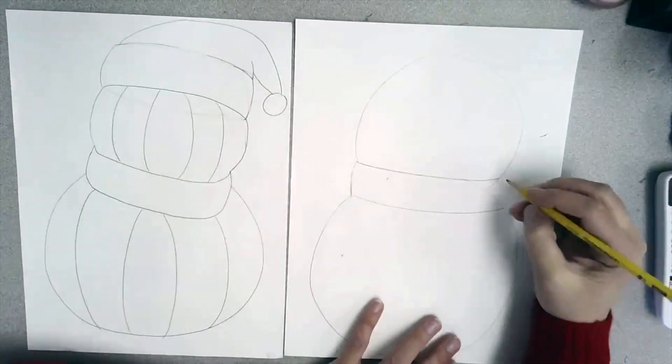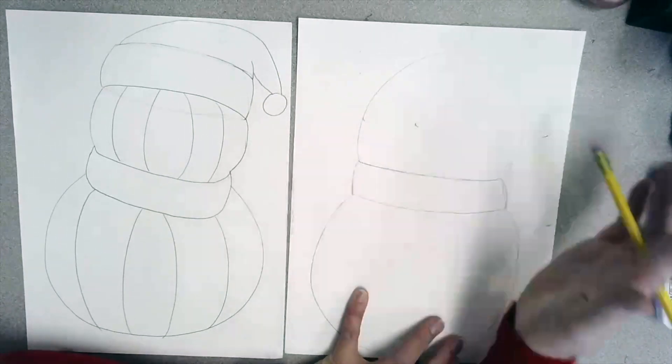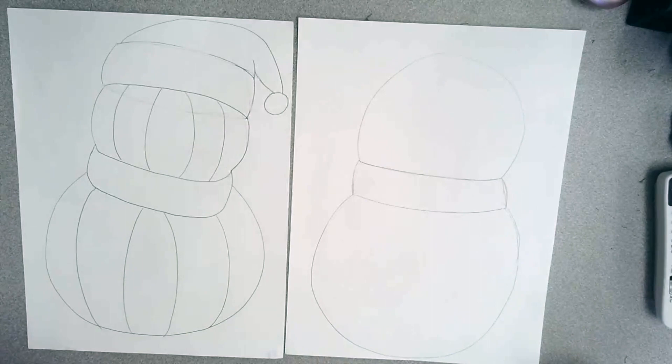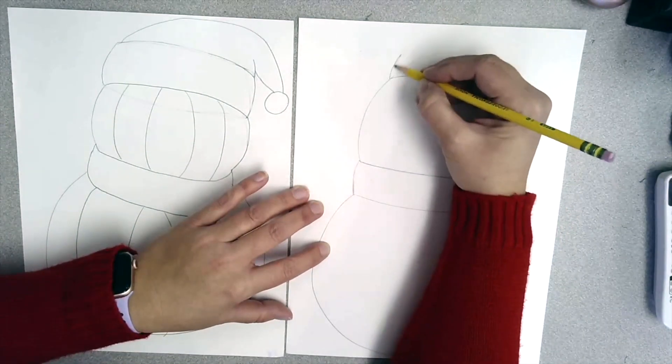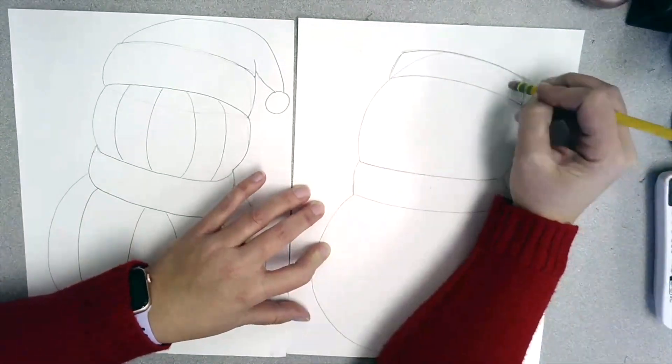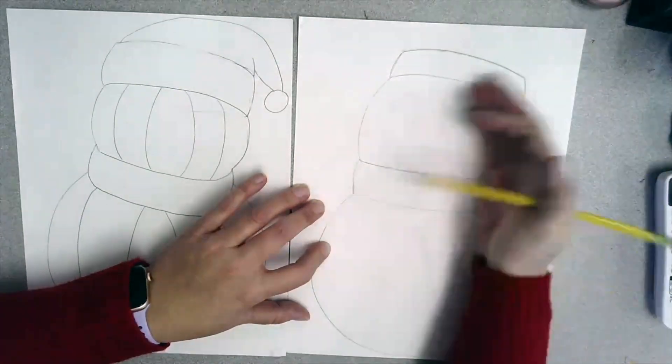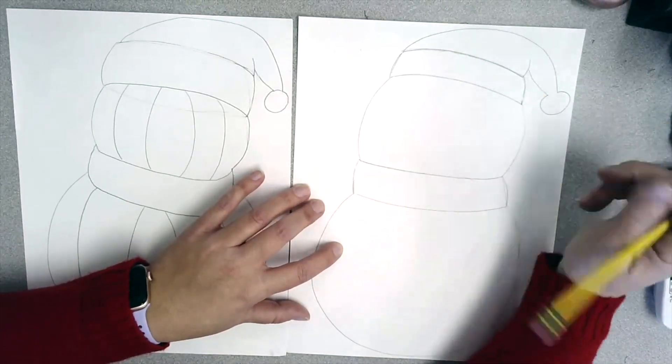I'm going really fast in this video because you're going to get a handout on how to draw the different steps to the snowman. So if you are having trouble remembering how to draw the snowman, you'll have the handout to help you step by step through it. Next we're going to draw the stocking cap sticking off the side of his head.